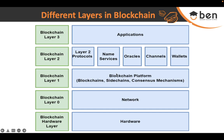Moving on, we have the blockchain platform layer, where we take care of consensus mechanisms. This layer handles the security aspect of the blockchain. Since it's a decentralized platform, we need to maintain the integrity of the data, encrypt it, and make it safe for communication. Because we store the same data on multiple machines, any new data being added or changes to the blockchain state must be verified — that's what consensus mechanisms and side chains handle here.